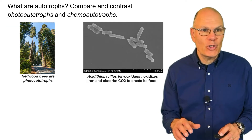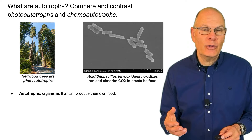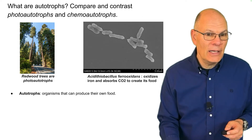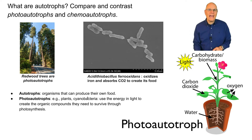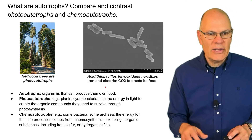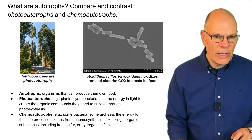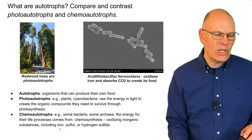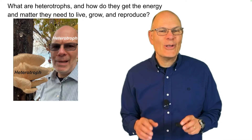What are autotrophs? Autotrophs are organisms that can produce their own food. We are not autotrophs, but plants and certain bacteria and archaea are. Photo autotrophs include plants and cyanobacteria — they use the energy in light to create organic compounds through photosynthesis. Chemo autotrophs include some bacteria and some archaea; the energy for their life processes comes from chemosynthesis, which involves oxidizing inorganic substances including iron, sulfur, or hydrogen sulfide.